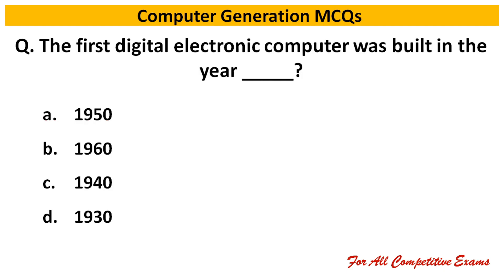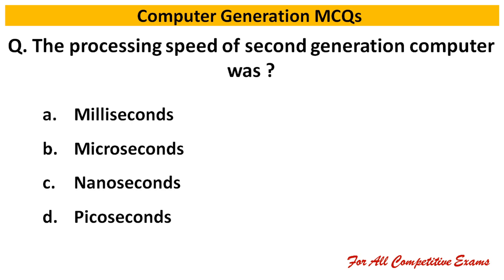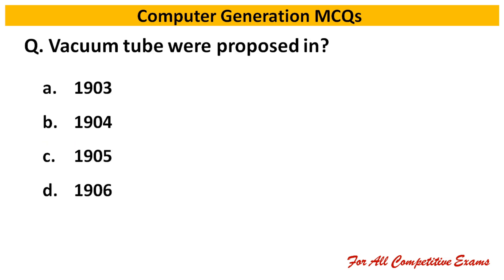Next question: The first digital electronics computer was built in the year dash. Right answer is 1940. Next question: The processing speed of second generation computer was — Right answer is microseconds.